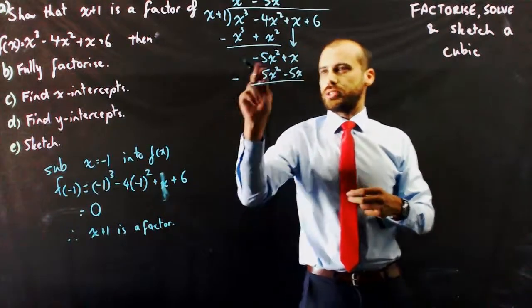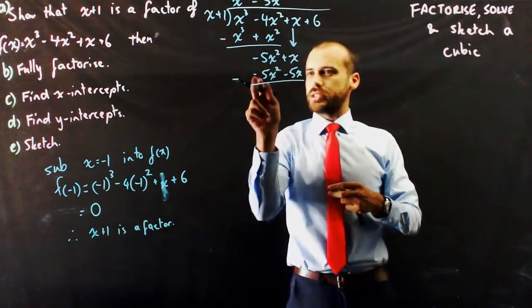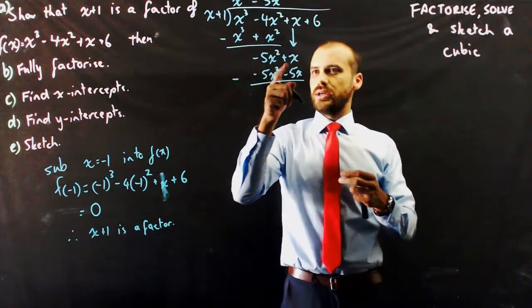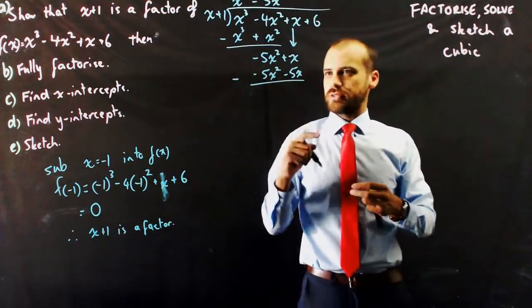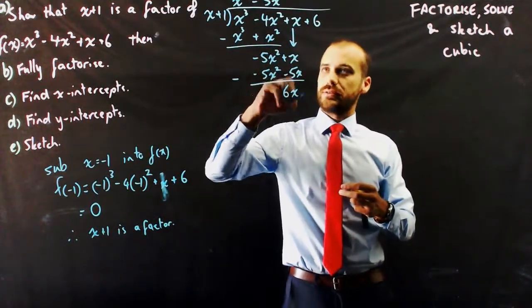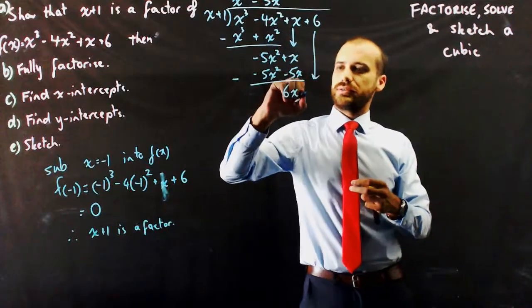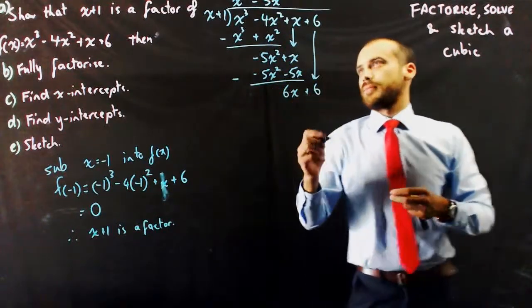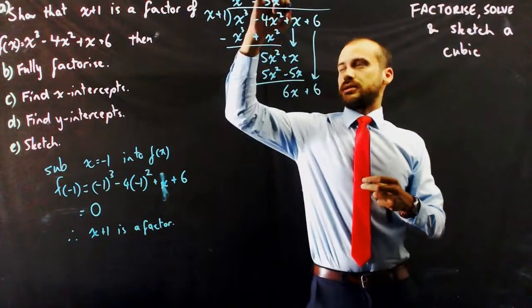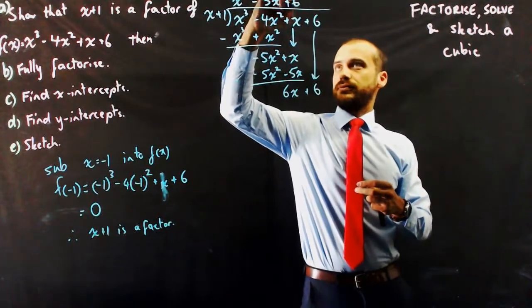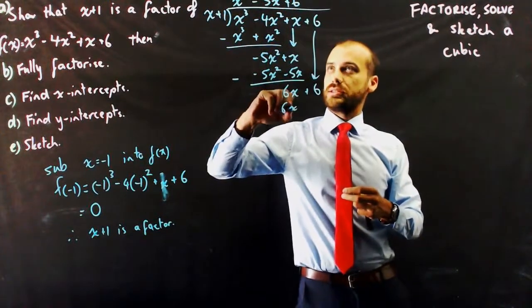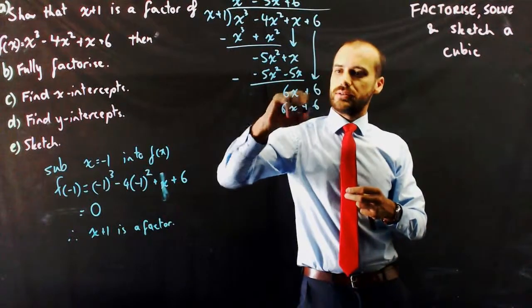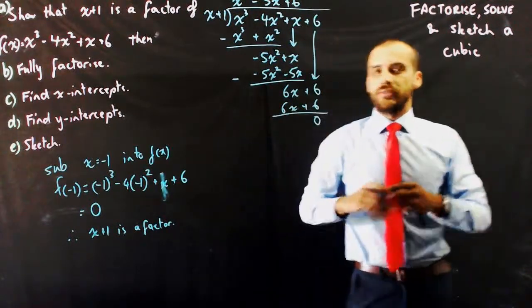Subtract. Make sure you're careful with your subtraction. Negative 5x squared minus minus 5x squared is 0. x minus minus 5x is 6x. Bring our x down here. 6x divided by x is 6. 6 times x is 6x. 6 times 1 is 6. Remainders 0. Finished.